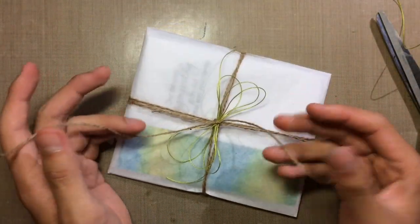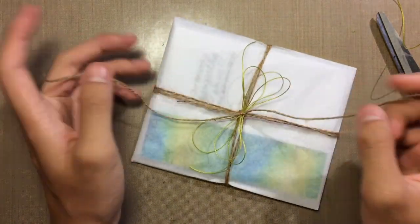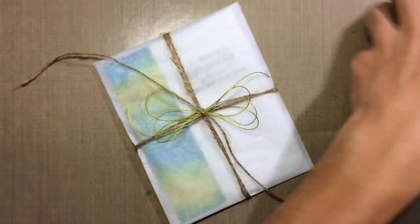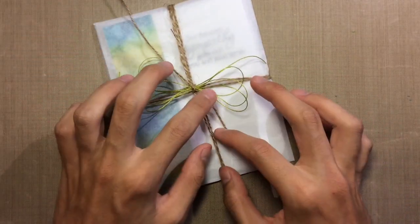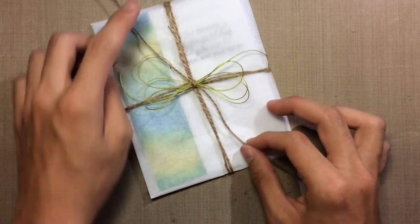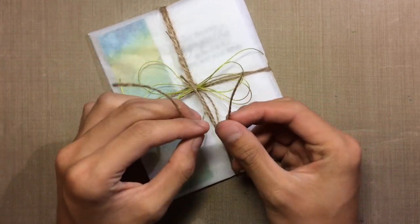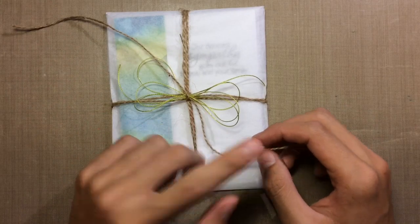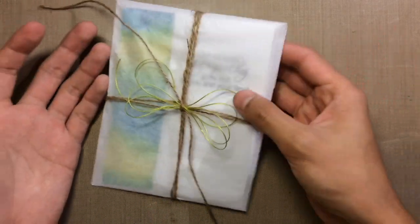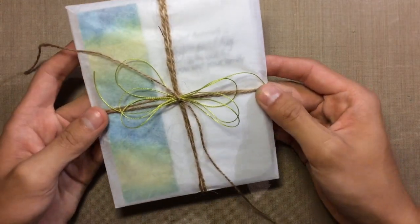Now with this, I like to have tails about this long because if I want to add a tag or any different kind of decorative thing to the center, I always have this to be able to adjust. Sometimes you want to just cut it off shorter and that can be it, or if you want to add a tag you can go ahead and do that.